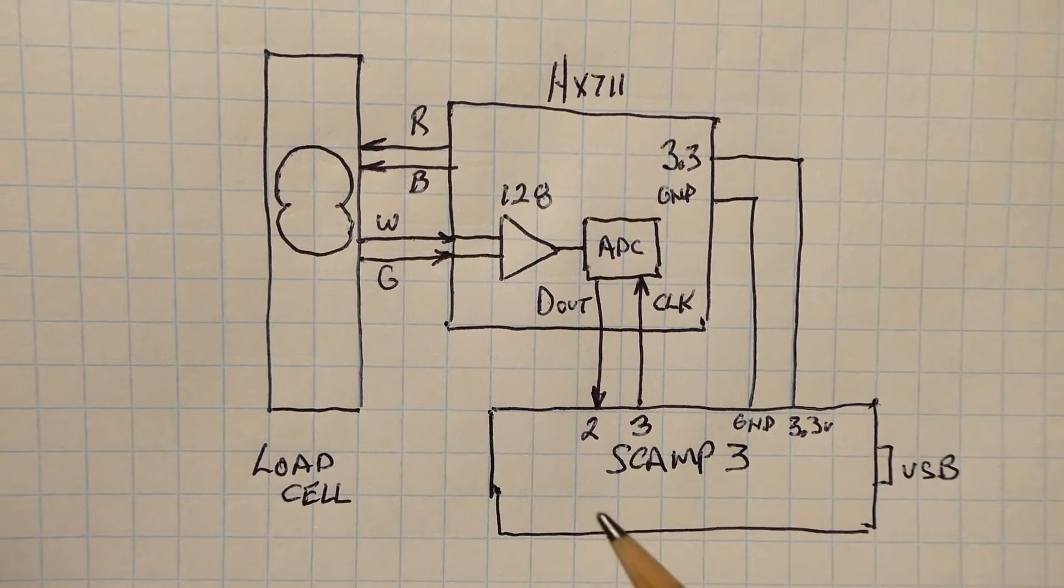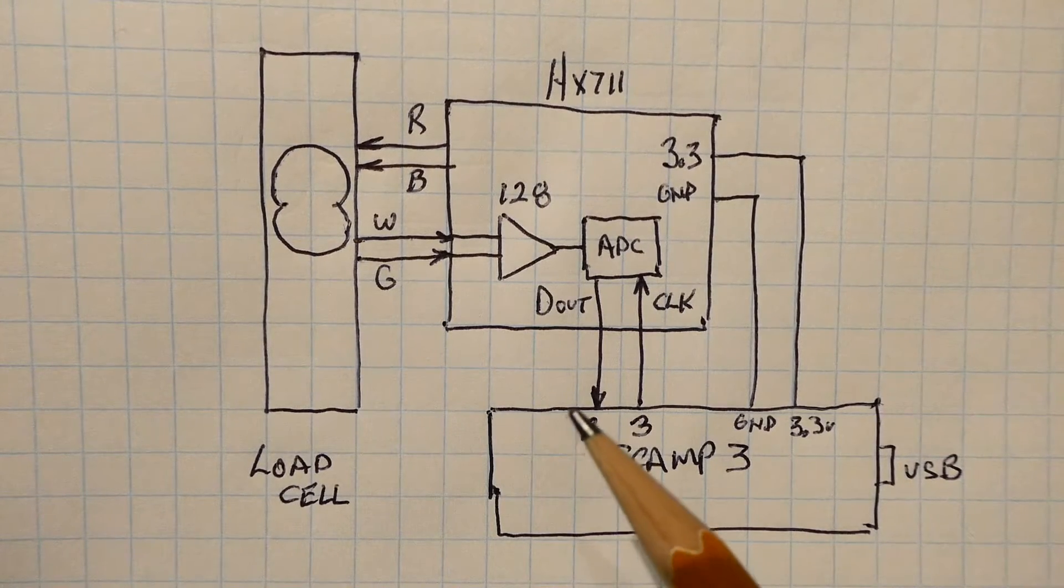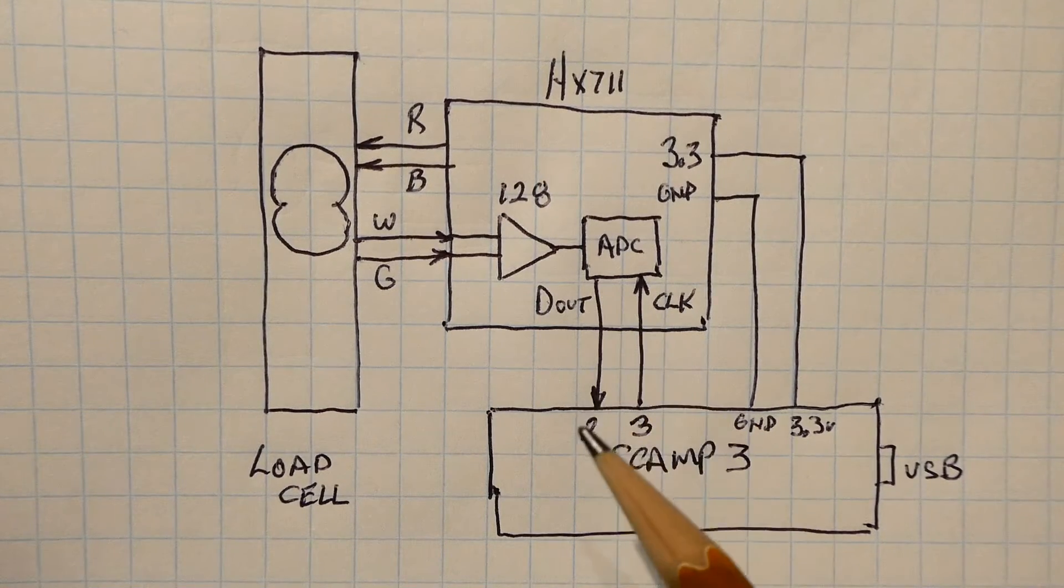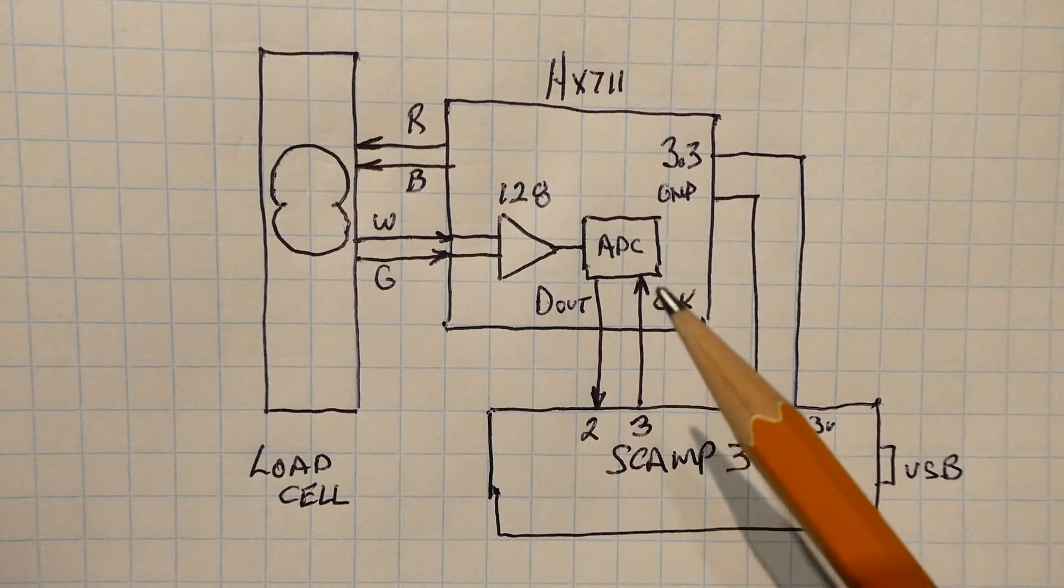Now the SCAMP3 board is looking at the D out and when it's high that means it's busy, that means it's doing a conversion, so it's waiting for D out to go low. When D out goes low, it's going to send a clock pulse into the ADC.